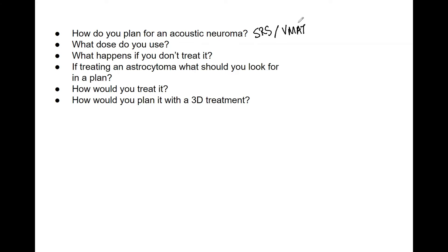For SRS you could potentially use cones, HD MLCs, or whatever you normally use for SRS treatment planning. You could also use VMAT if the tumor is somewhat larger — some people use VMAT with Eclipse for SRS. As for dose, it depends on the physician, but for the exam a broad range of 12 to 13 Gray is a good answer, close enough based on physician preferences.